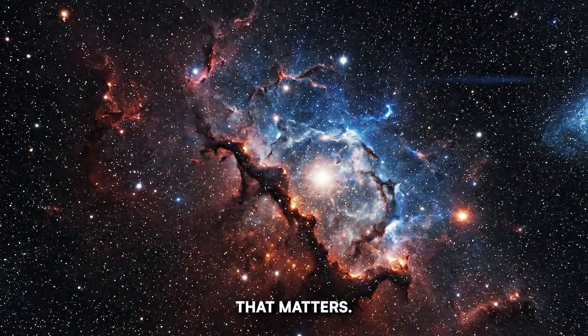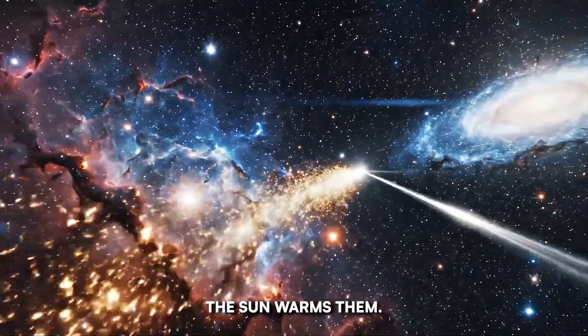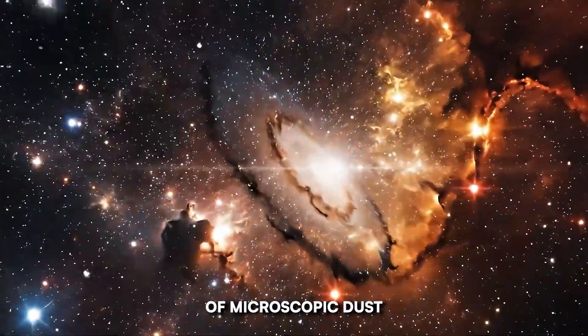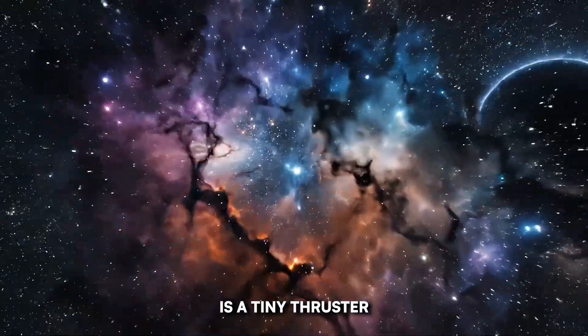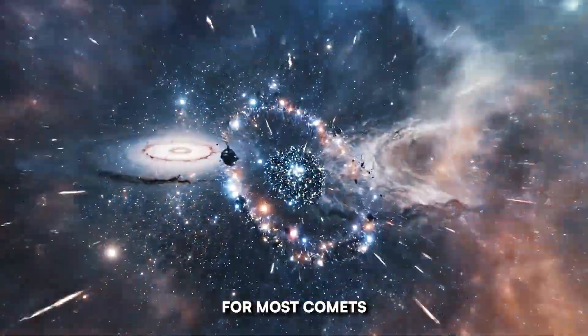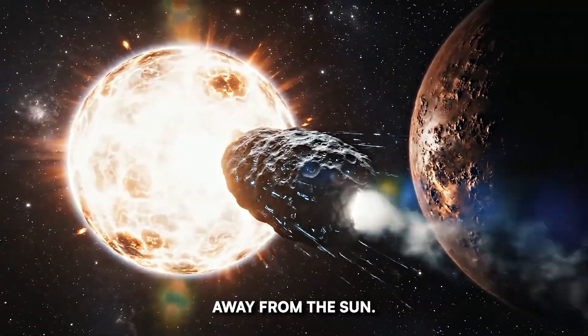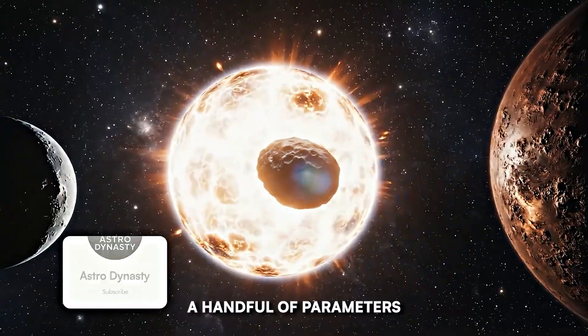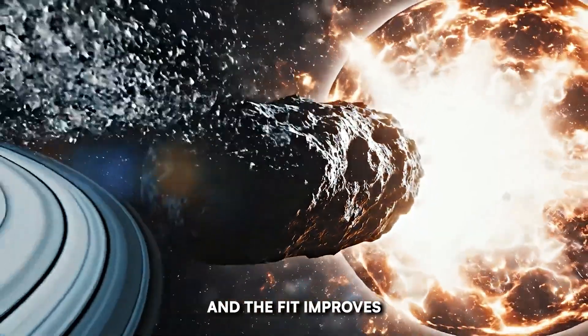Here's why that matters. Comets aren't rocks on rails. The sun warms them. Ices sublimate. Gas vents. A fountain of microscopic dust blooms and sails away. Each jet is a tiny thruster nudging the nucleus. For most comets, that non-gravitational acceleration is weak, messy, and on average points away from the sun. You account for it by adding a handful of parameters, terms that say a little push here, a little push there, and the fit improves.